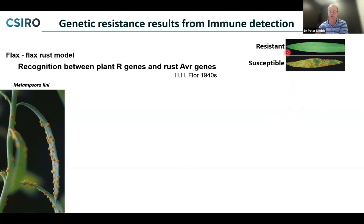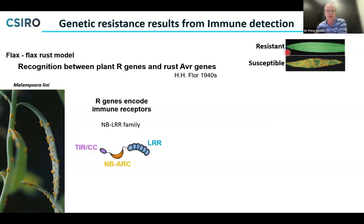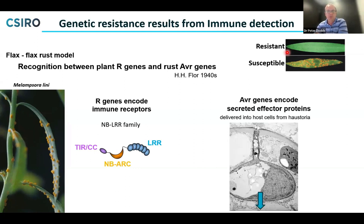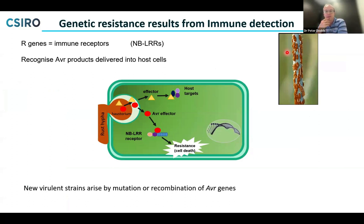What we now know from work in this system and many other plant disease systems is that resistance genes encode immune receptors. There are many hundreds — sometimes thousands — of these in any plant genome. In the rust system, the avirulence genes detected by these receptors are secreted proteins, secreted specifically from haustoria structures and delivered into the host cell during infection. Their purpose is to support infection — many of these effectors bind different host targets and try to manipulate the host to make it a better place for the rust to grow. But some get recognized by these receptors, and when you have an effective receptor and the appropriate ligand in the rust, you get a resistance response that prevents infection.